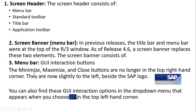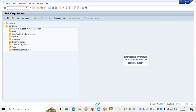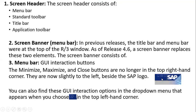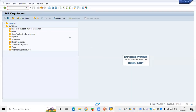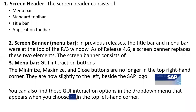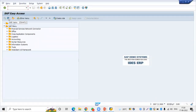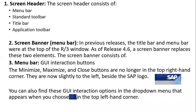The menu bar includes the GUI - Graphical User Interface, which I explained in the last session. In the menu bar you can see minimization, maximization, and close screen options. You can also find GUI interaction options for drop-down menus in the left-hand corner. The SAP menu options are visible here on the screen.